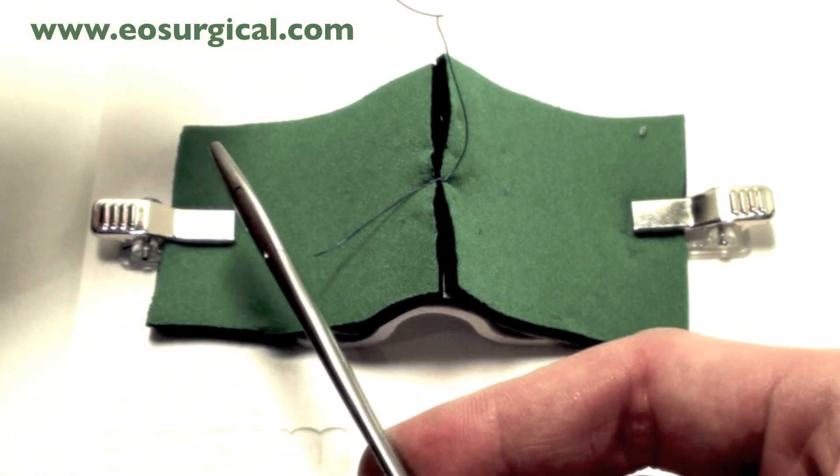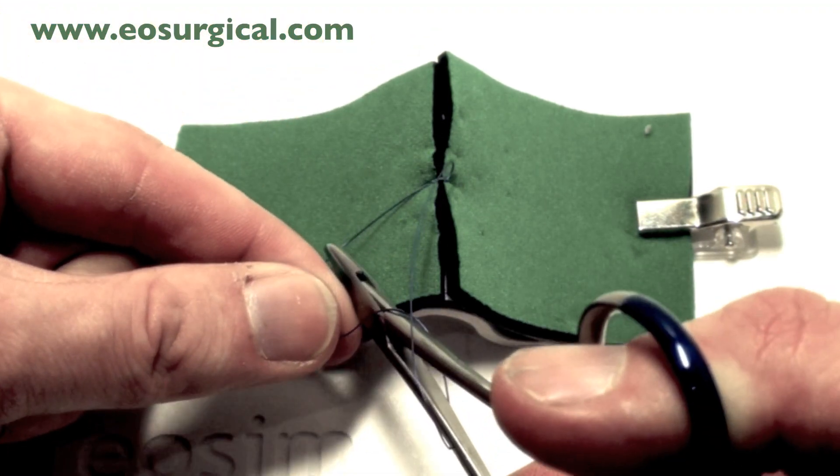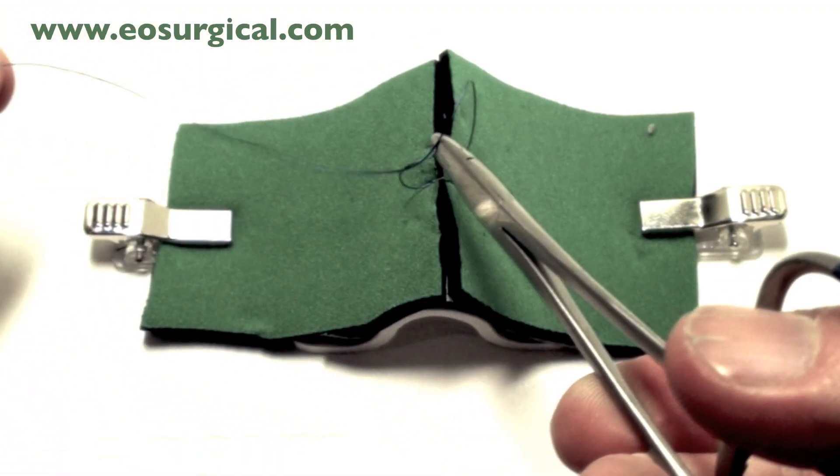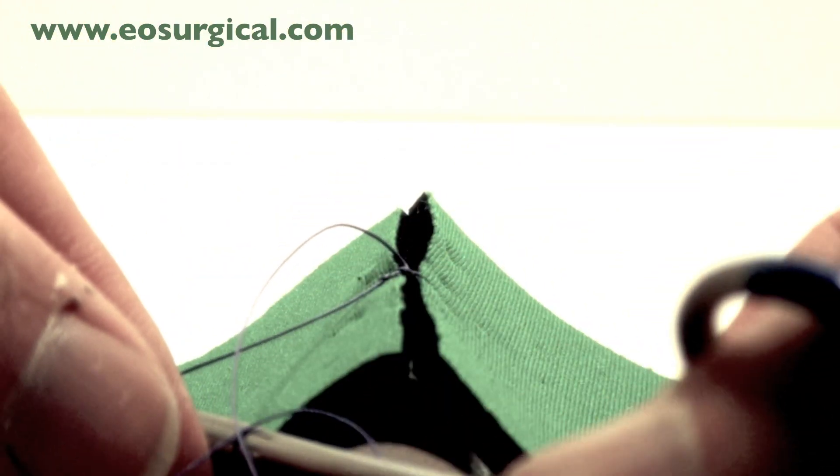Then reverse the process and bring the needle holder from the short end to the long end, and again a flat knot should be thrown as shown here.